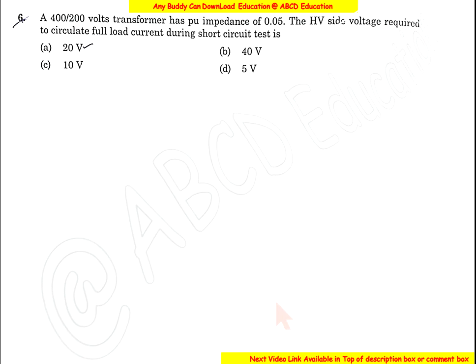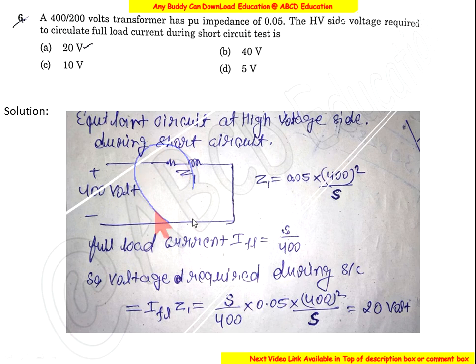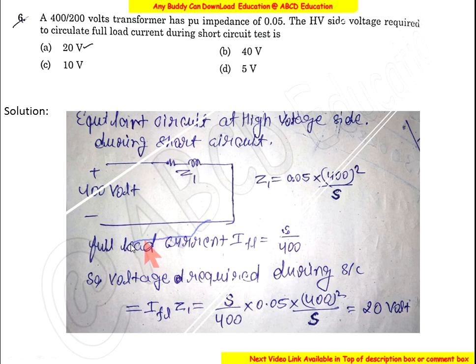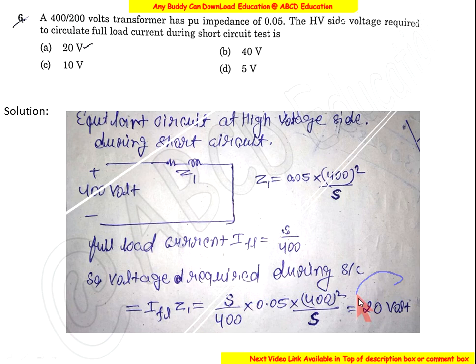Question 6: A 400/200 volt transformer has a per-unit impedance of 0.05. The high-voltage side voltage required to circulate full-load current during the short circuit test is calculated using the equivalent circuit. Full-load current equals power divided by voltage. The voltage required equals full-load current multiplied by actual impedance, giving 20 volts. The correct option is A.